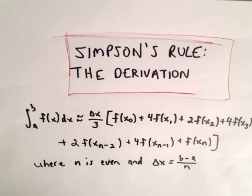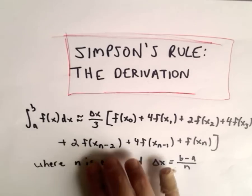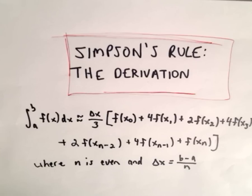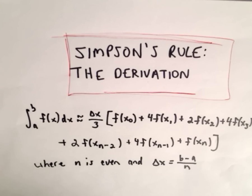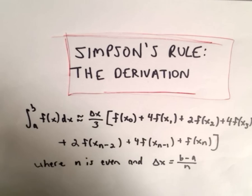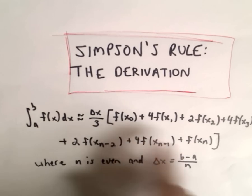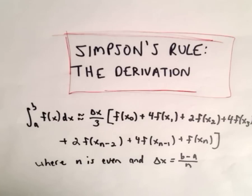This video is going to be about Simpson's Rule from Calculus, which is a way to approximate definite integrals. I've jotted down Simpson's Rule — if you've never seen it before, there are these alternating coefficients in the formula: 4, 2, 4, 2, and the first and last terms have a coefficient of 1. I want to talk about deriving the formula.